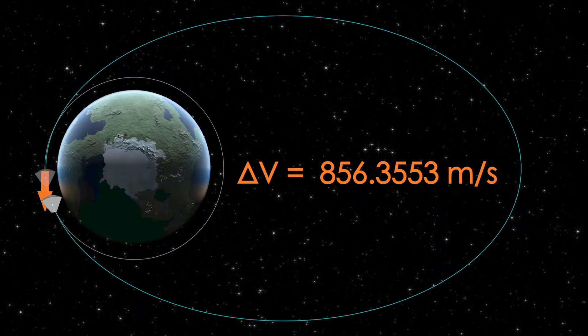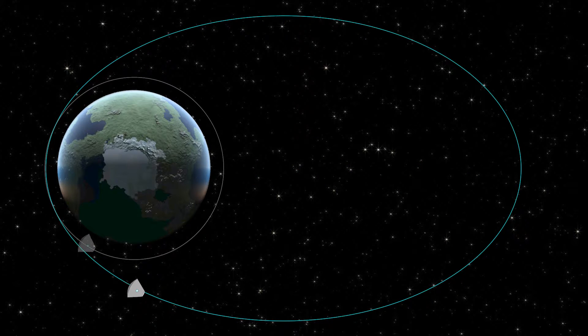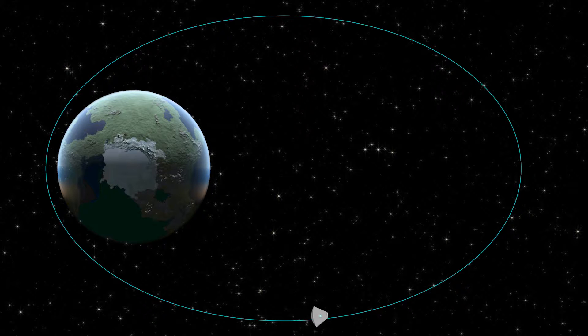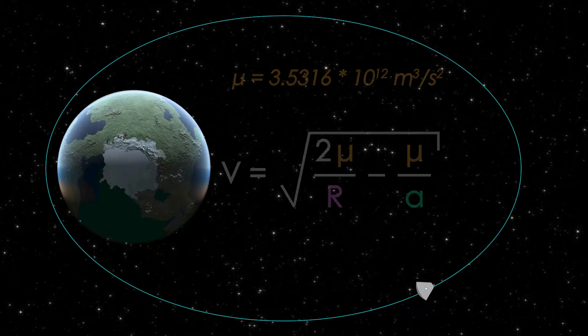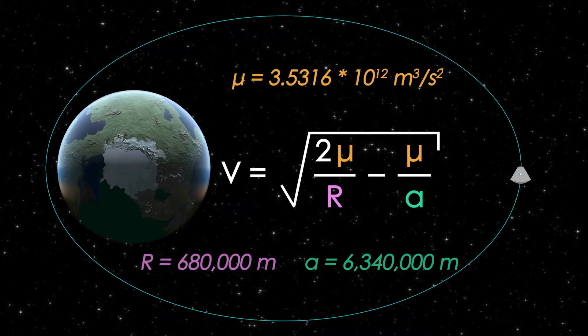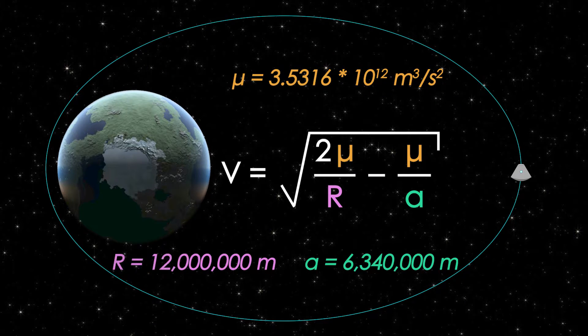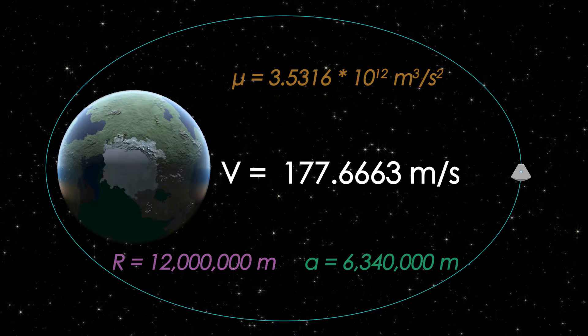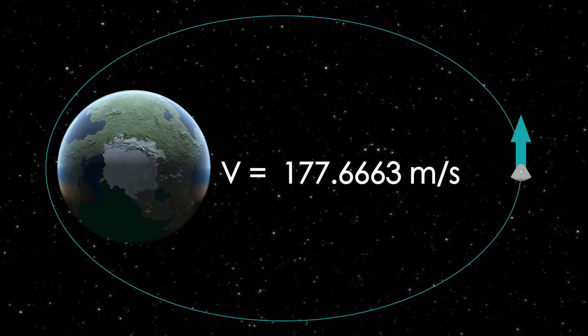And with that, we're well on our way to the moon, but we still need to find out how much delta-v we need to slow down when we get there. First, let's find out our speed at the apoapsis of the transfer orbit using the same equation again. We keep the semi-major axis, change the radius, and it comes out to 177.6663 meters per second.